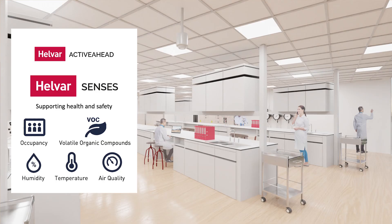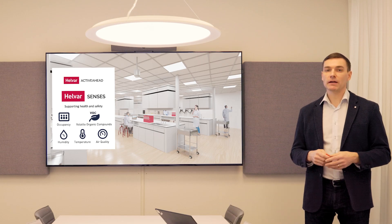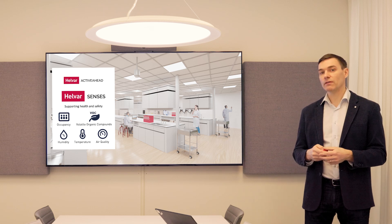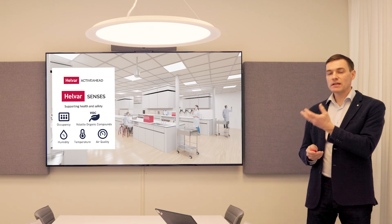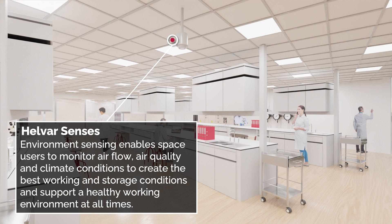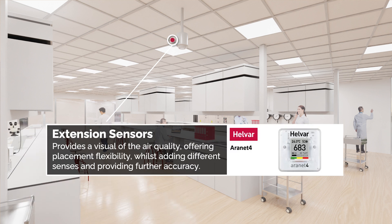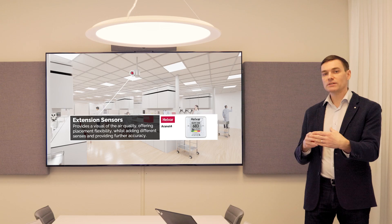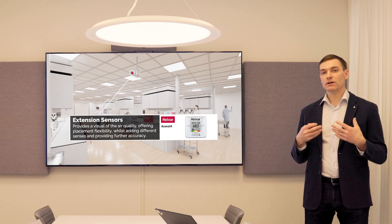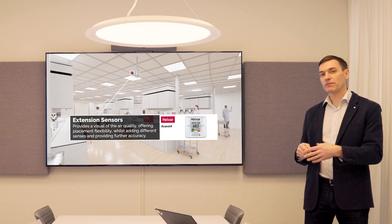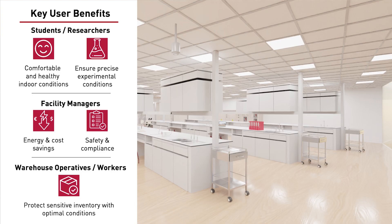That is why in these spaces we have the Helvar Activate solution for lighting controls and Helvar Senses to monitor and adjust the building systems, optimizing the spaces for the people in them as well as the chemicals stored there. The environmental sensor is in the ceiling of the room, and in addition to it, we use expansion sensors to visually indicate to people the current air quality conditions — such as CO2 levels and temperature — so they can check if something seems wrong. Safety and security is the most important aspect in the science lab, but the lighting must also be easy to operate, with manual override options available.